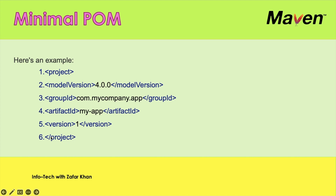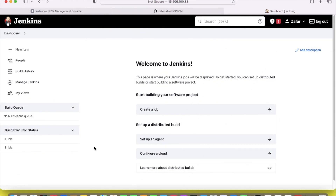So let's create this POM file. What we will do is create this POM file in a remote repository, integrate that repository with Jenkins, and finally execute this POM file through Jenkins. This is the Jenkins front page, so we will just create a project first. But before creating a project, we have to check whether the Maven configuration is there or not.